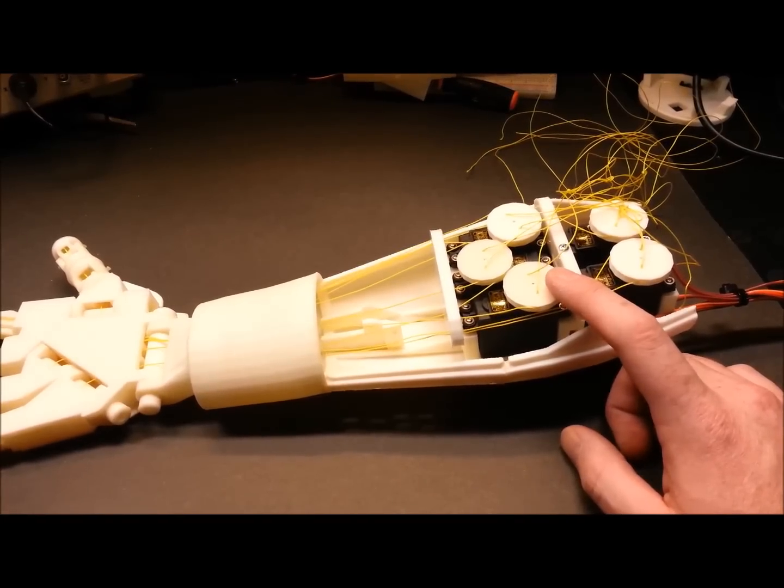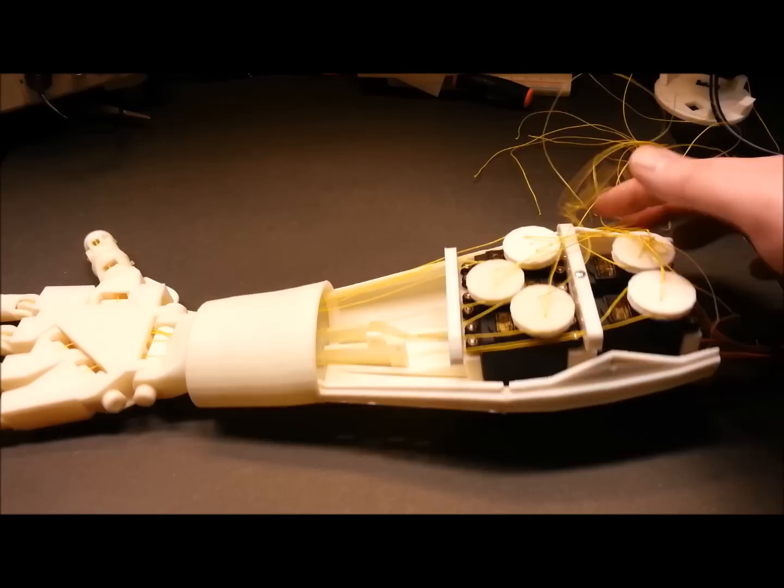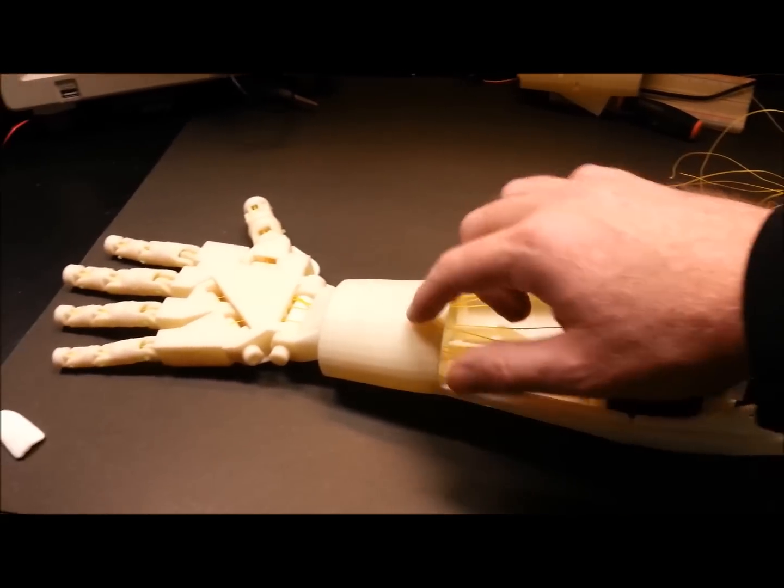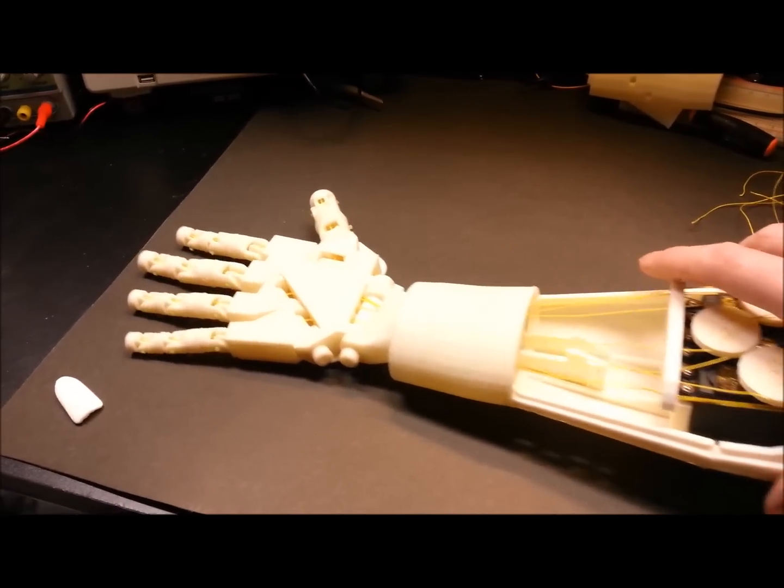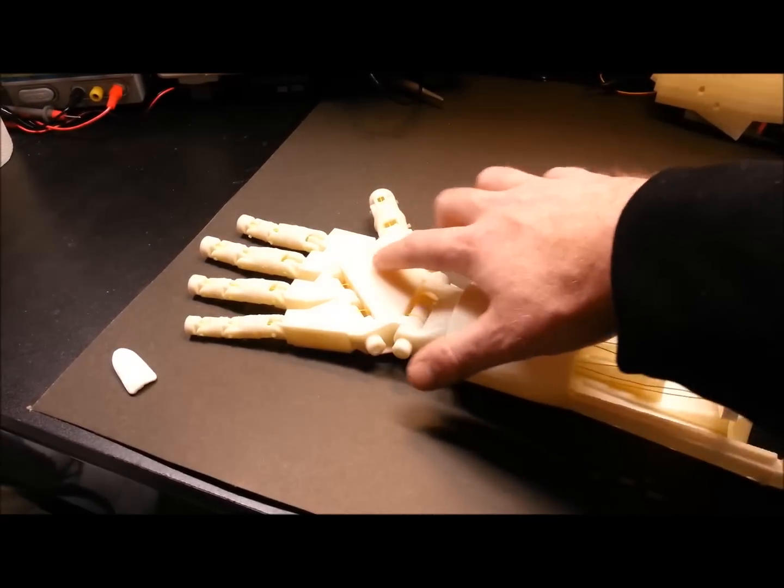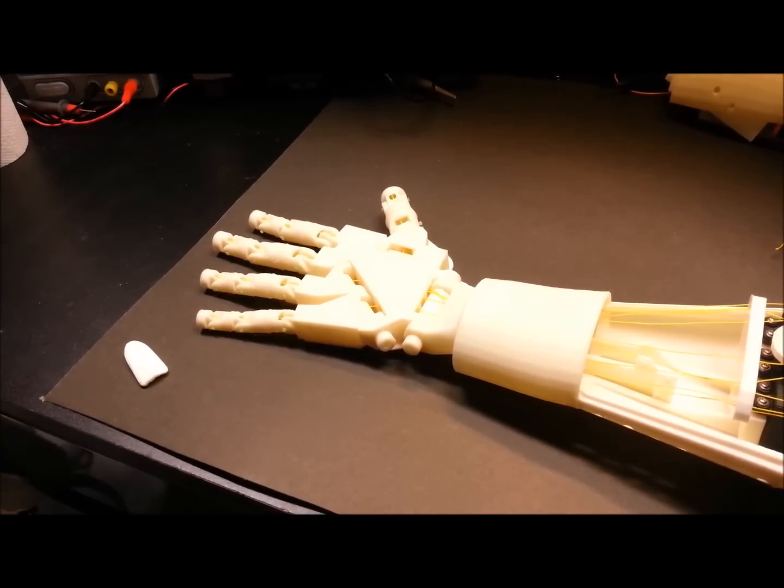The spaghetti soup mess is here just so I could get everything strung. It's very important how you string these down the fingers - there's no overlap, no binding. They have to be on the correct side for a pull open or closed. So far, so good.